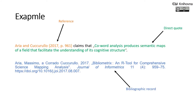Here you can see an example of a direct quote. First, there is a reference in orange that tells us who was making the claim. Then there is a green direct quote indicated by brackets. And finally, we have an example of a bibliographic record which contains detailed information about the piece that we are quoting.